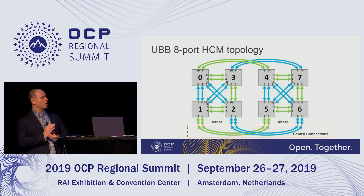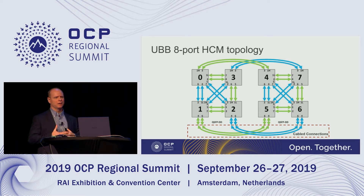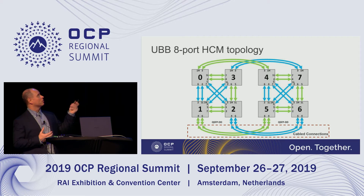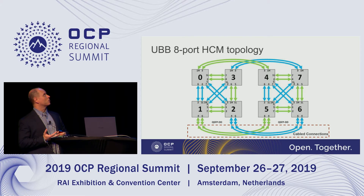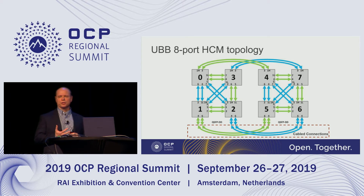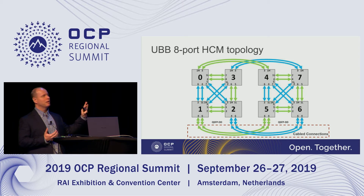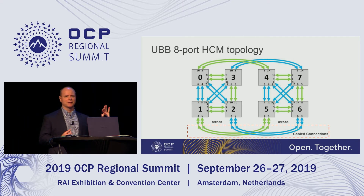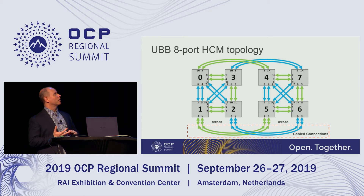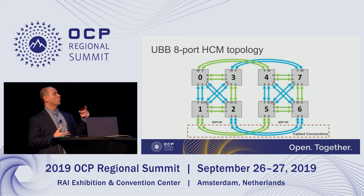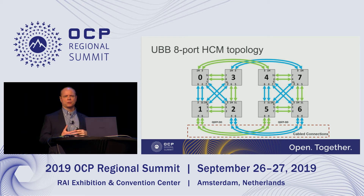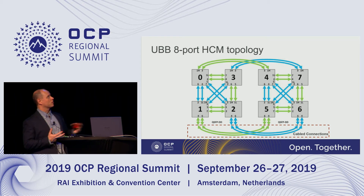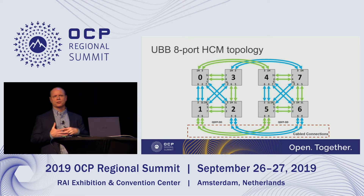This is the eight-port HCM topology. These are x8 PCIe links going between each of the OAM module ports. Ports two through seven are using only x8 of those, even though they are set up as x16 ports in the OAM pin mapping. Port one is split into one low and one high — the lower eight lanes and the upper eight lanes — so we use this configuration to get a full x8 hypercube mesh between everything.